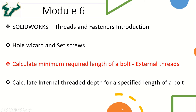Hello and welcome to this segment of module 6 on threads and fasteners. In this video we will be looking at how to calculate the minimum required length of the bolt for the external threads. If we want to create an assembly and we have been given the type of bolt, how do we design the length of that bolt to ensure that the assembly is completely secured?